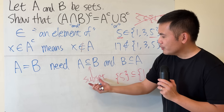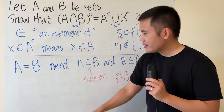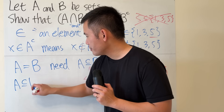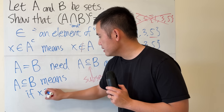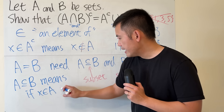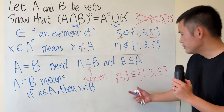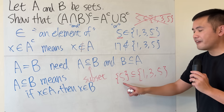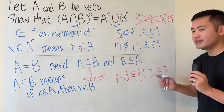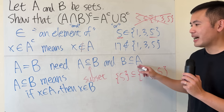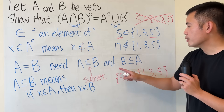So if you want to show one set is a subset of the other, what do we do? Right here, I will have to tell you: A is a subset of B means the following — if an element is in A, then the element has to be in B. As you can see, this is a subset of that: 5 is in this set, 5 is also in this set, that's why this is a subset of that. And as you can see, to show A is equal to B, we show that A is a subset of B and also B is a subset of A.